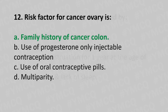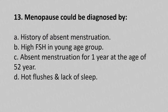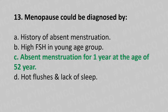Question 13: Menopause could be diagnosed by — option A: history of absent menstruation, option B: high FSH in young age group, option C: absent menstruation for one year at the age of 52 years, option D: hot flushes and lack of sleep. The answer is option C: absent menstruation for one year at the age of 52 years.